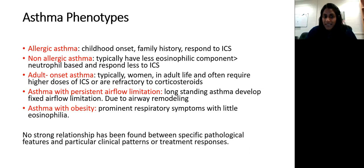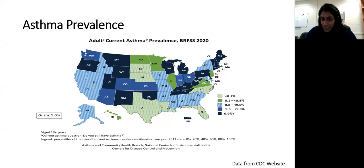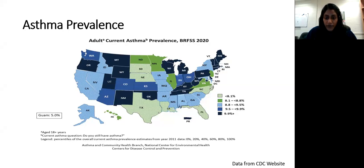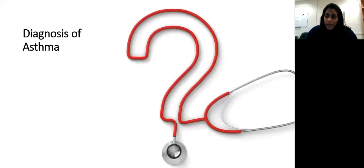Looking at asthma prevalence using the most up-to-date CDC data: in West Virginia, about 10% of the population has asthma — that's one in ten patients. Counties with more occupational exposures, environmental exposures, more pollen, and more greenery have a higher risk of asthma, as shown in the different color codes on the map.